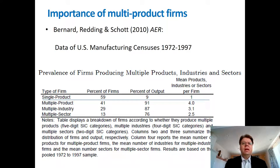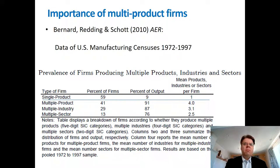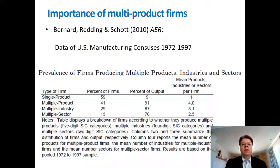Let's look into the importance of multiproduct firms. I have reproduced a table from a study by Bernard, Redding, and Scott in the American Economic Review about 10 years ago. They look at U.S. manufacturing census data and examine the prevalence of multiproduct firms and industries. In their data, almost 60 percent of firms are single-product firms, but they cover only 9 percent of output, so single-product firms tend to be rather small. 41 percent of the firms are multiproduct firms and cover 91 percent of total output.